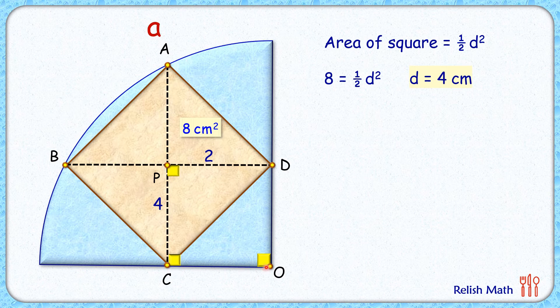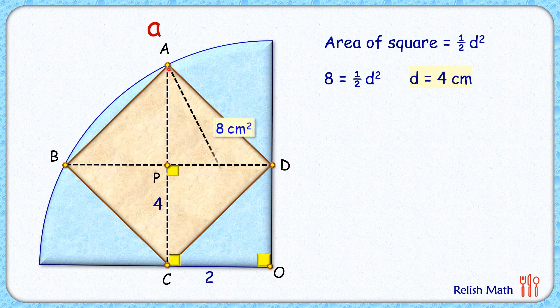This figure CODP now is a square getting formed here, and thus the length CO will be same as PD, or CO is 2 centimeter. Now let's join AO. AO is radius of the circle. Let's assume it is R.